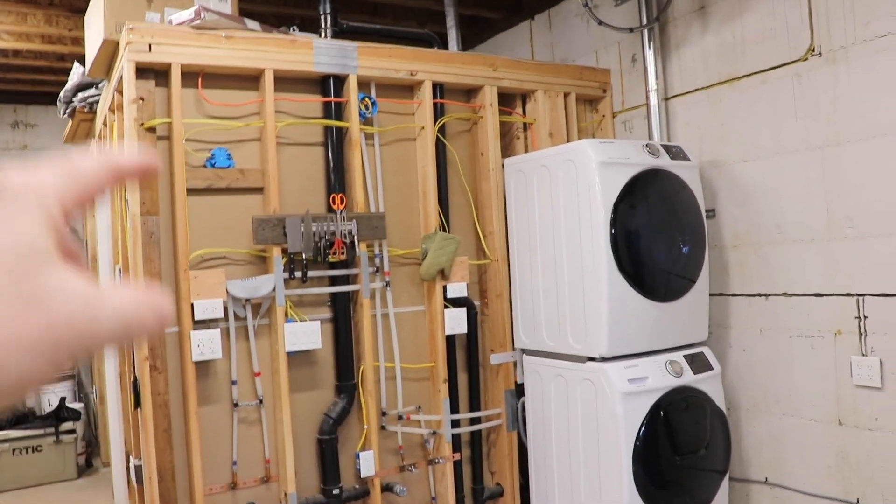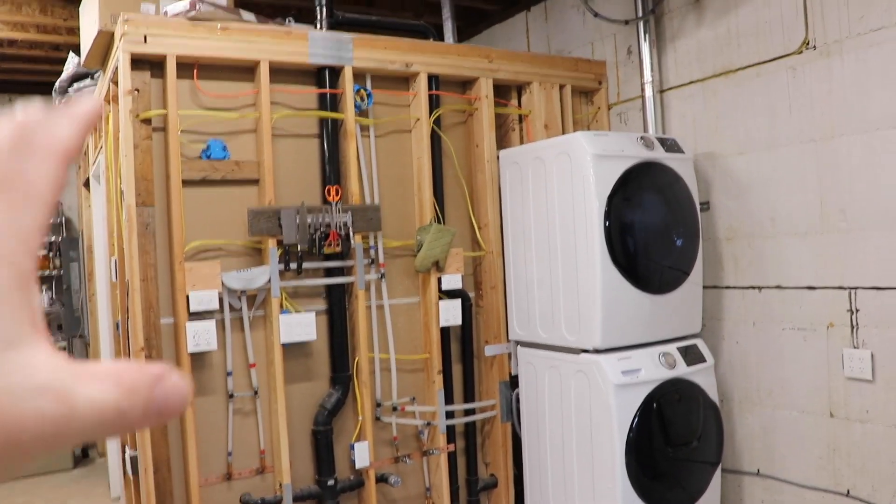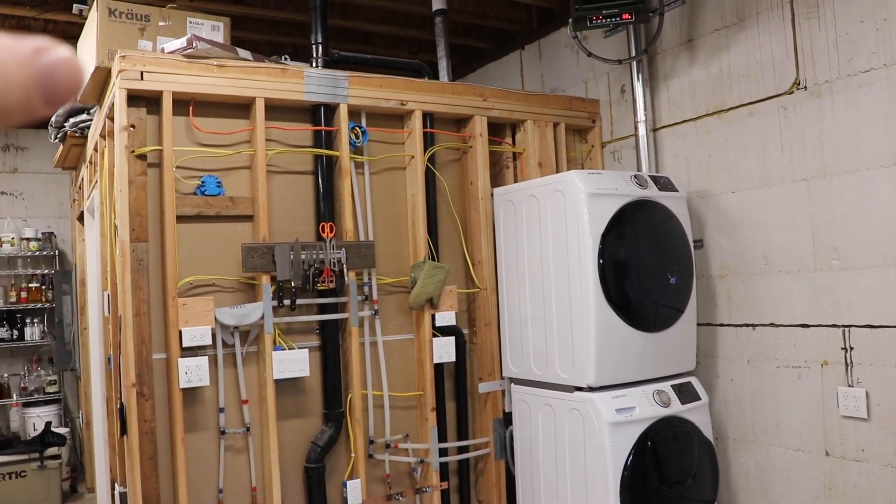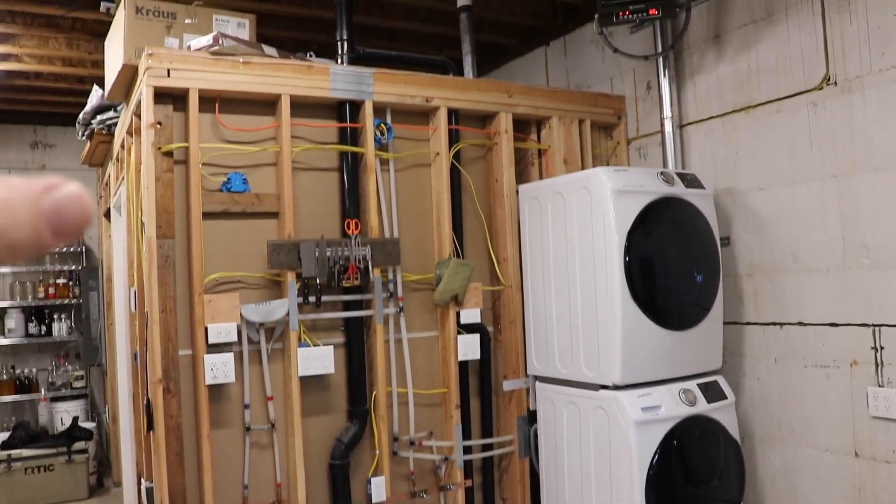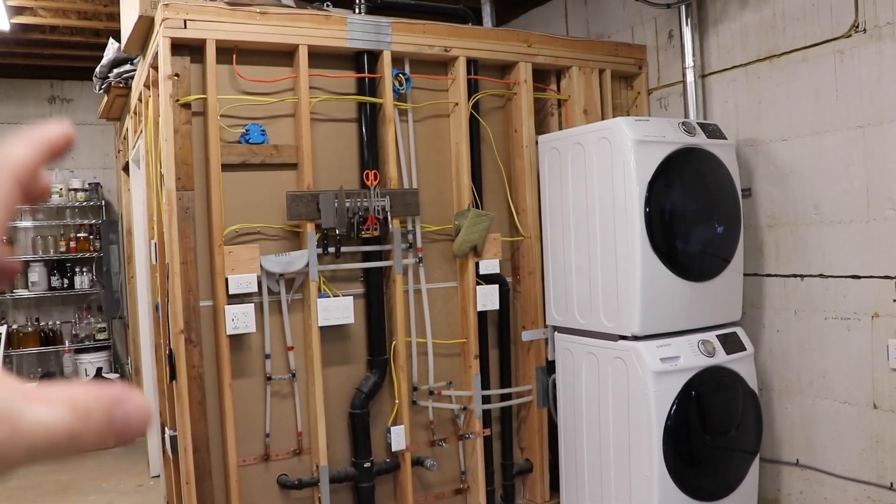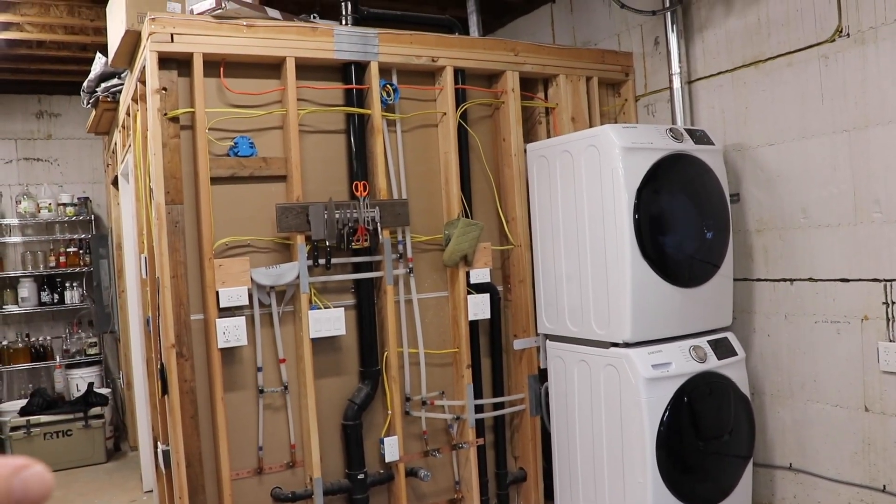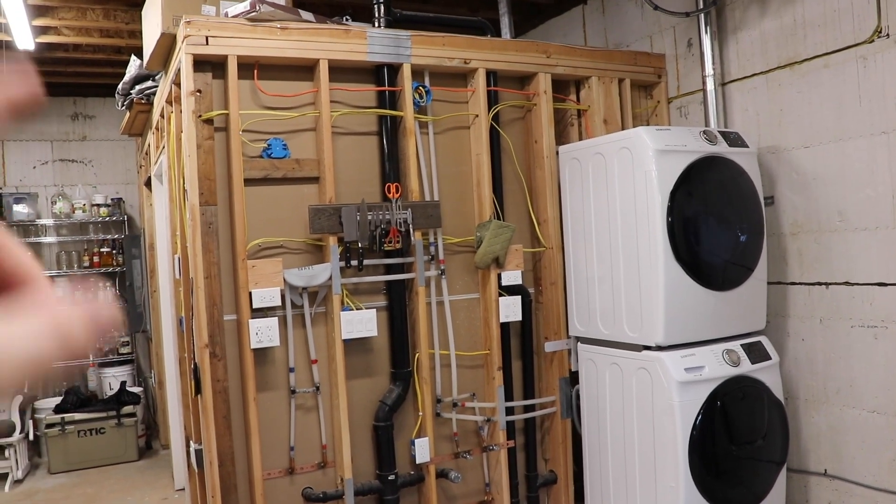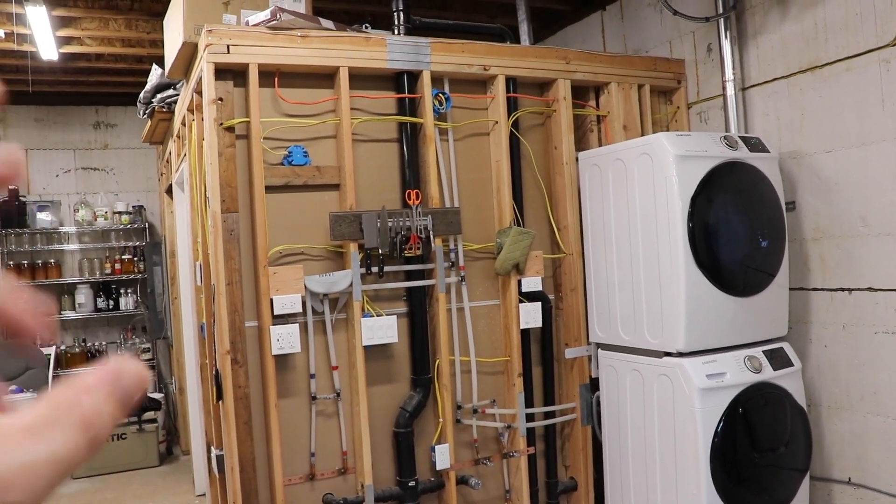This horribly ugly wall, chock full of electrical and plumbing, is going away today. Don't get us wrong, we're insanely proud of this wall. It was the first wall that we actually stick built in the house, and it's got our bathroom. We had to do electrical and plumbing and a lot in this wall. Probably one of the most complicated walls in our house except for the kitchen wall, which will be a notch crazier.